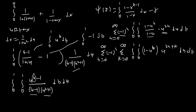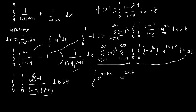Focusing on the inner integral, we have the integral from 0 to 1 of u to the 2n plus k minus u to the 2n plus k plus b du. When we integrate this, it's just going to end up being 1 over 2n plus k plus 1 minus 1 over 2n plus k plus b plus 1. So let's go ahead and apply that.